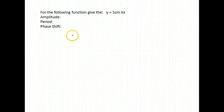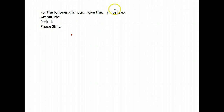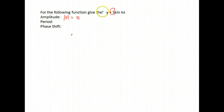For the following function, find the amplitude, the period, and the phase shift. We talked about the amplitude — you take the number that's multiplied in front and do the absolute value of it. The absolute value of 5 is just 5.